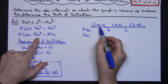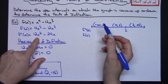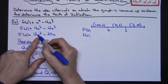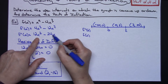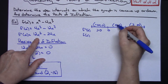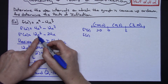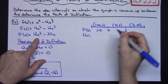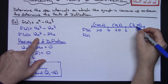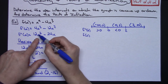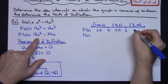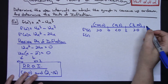I pick a test number from each interval. For the interval negative infinity to zero, I pick negative one: negative one squared gives positive 12, and the second term is also positive, so the second derivative is greater than zero. For the interval zero to two, I pick one: I get 12 minus 24, which is negative, so the second derivative is less than zero. For the interval two to infinity, picking a number like three gives a large positive value minus a smaller positive, so the second derivative is again positive.